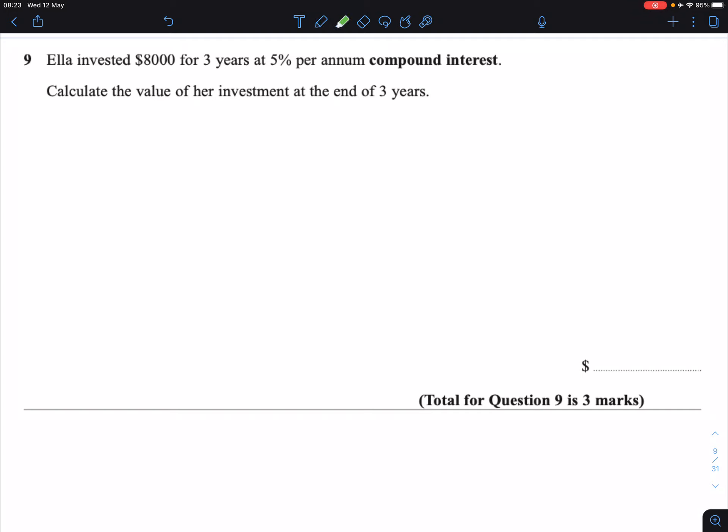So, in this question we are told that we are gaining money, so compound interest is when the bank pays you at 5% per year.